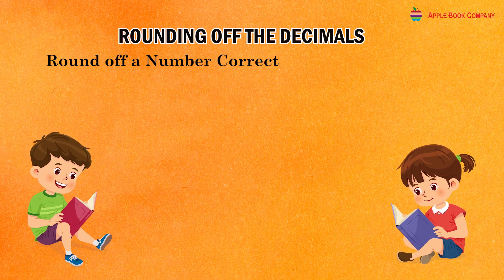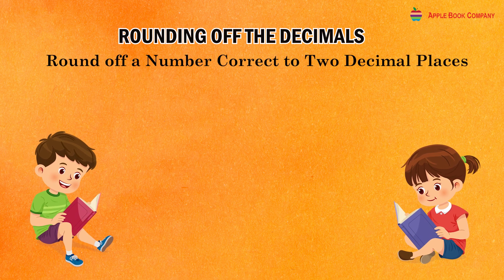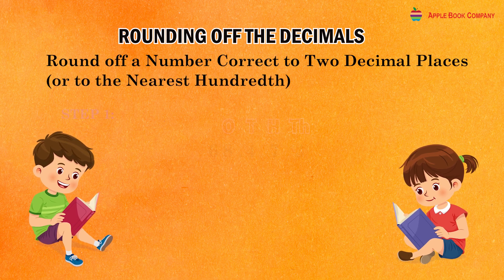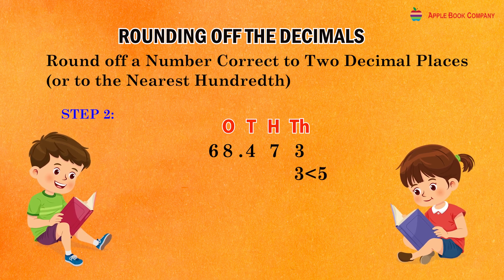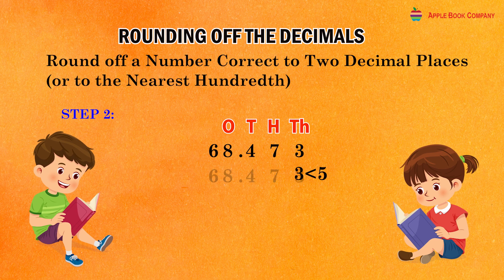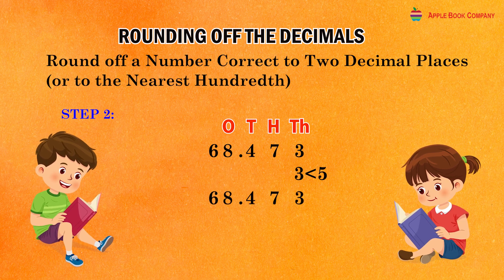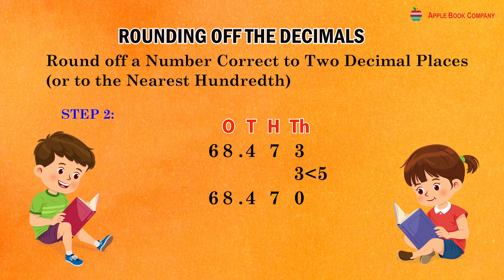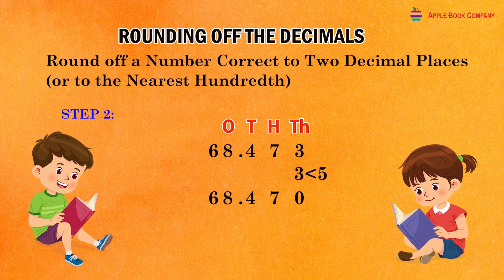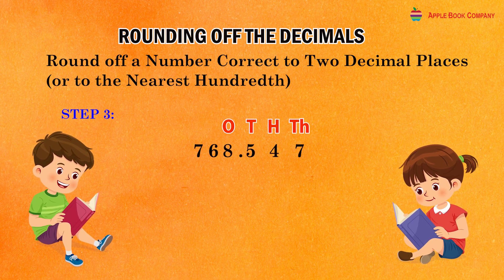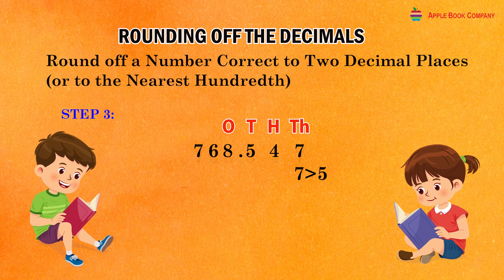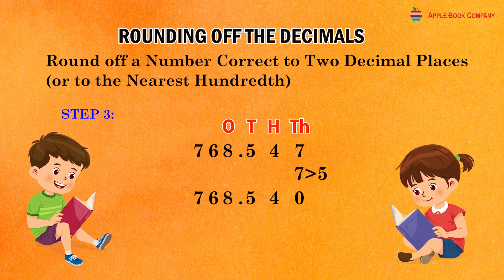Rounding of a number correct to two decimal places or to the nearest hundredth. Check the digit at the third decimal place. If the digit at the third decimal place is less than 5, replace each digit right to the third decimal place and onward by zero and keep all the digits before the second decimal place as they are. If the digit at the third decimal place is 5 or greater than 5, replace each digit after it toward the right by zero and increase the digit at the second decimal place by one.